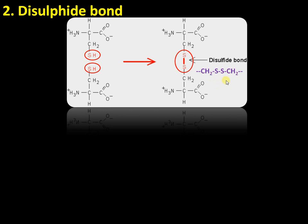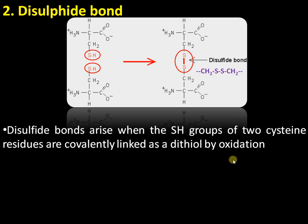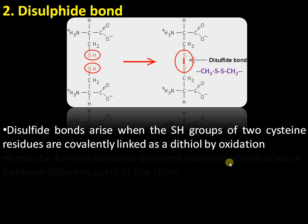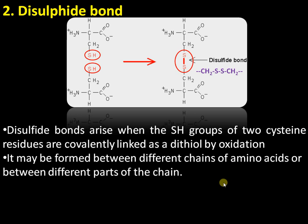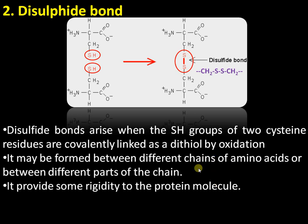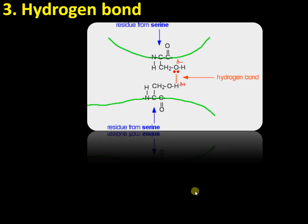The bond formed is the S–S bond, by oxidation — that is, removal of hydrogen. The bond is CH₂–S–S–CH₂, also called a disulfide bridge. Two cysteine residues are involved, and this is an important bond that imparts rigidity to the protein molecule. This can occur within the same chain or between different chains.